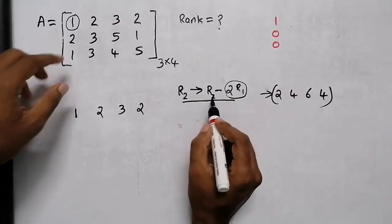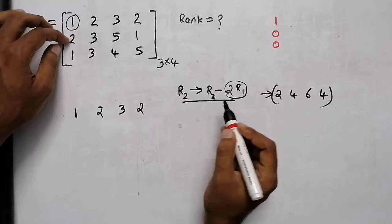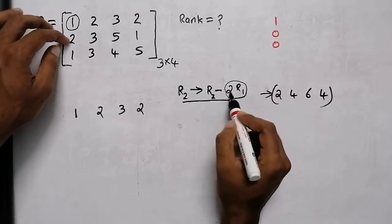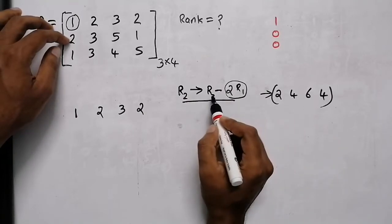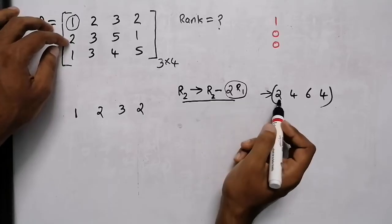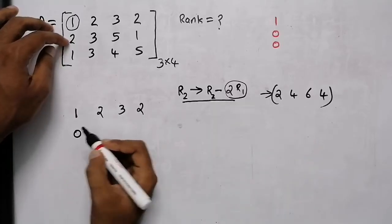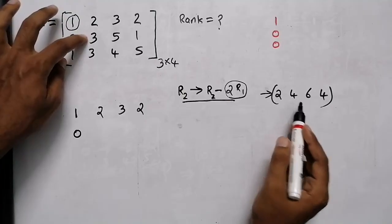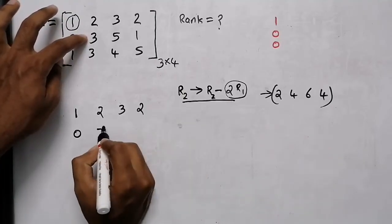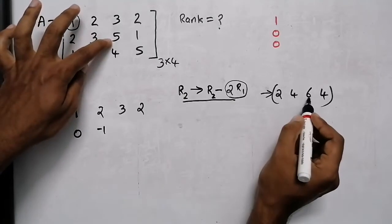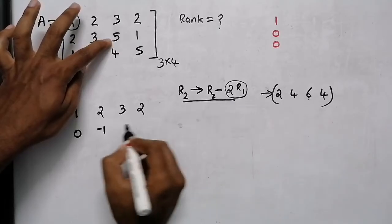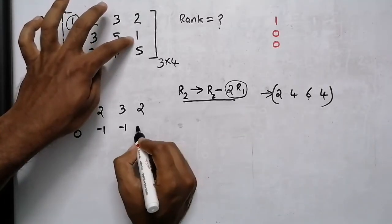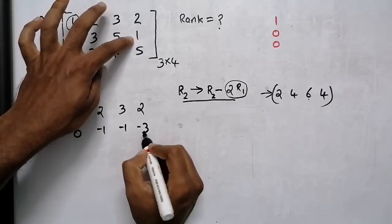Now we have to use this element because 2R2 is here. 2R1 is here. 2x2 is here. 3x4 is here. 5x4 is here. 1x4 is here. That is a minus 3.